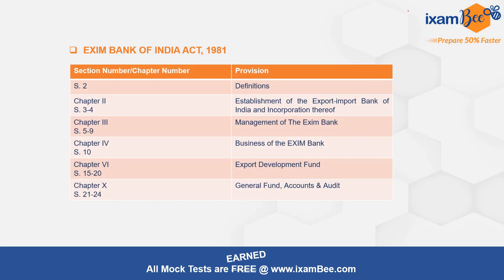As I told you, any objective or definition section is very important because it gives you the basics and foundation to understand the entire Act. Next is Chapter 2, which talks about the establishment and incorporation of the Exim Bank — the various provisions related to it are dealt with under Chapter 2, under Sections 3 and 4. Next is Chapter 3, covering Sections 5 to 9, which covers the management of the Exim Bank and how it will be managed.